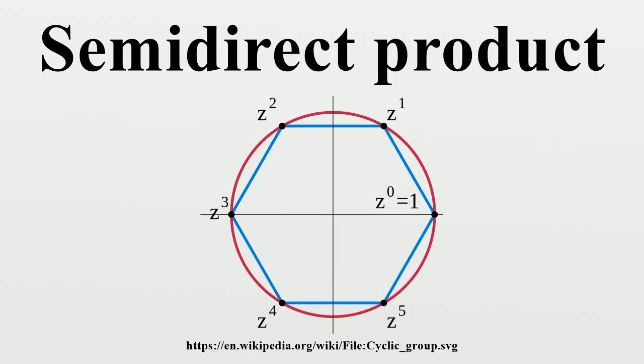There are two closely related concepts of semi-direct product. The inner semi-direct product is a particular way in which a group can be constructed from two subgroups, one of which is a normal subgroup, while an outer semi-direct product is a Cartesian product as a set, but with a particular multiplication operation.